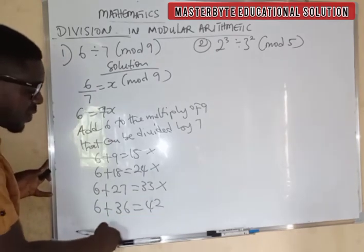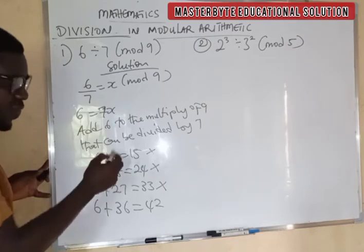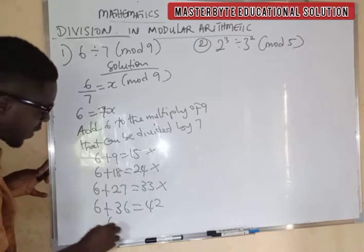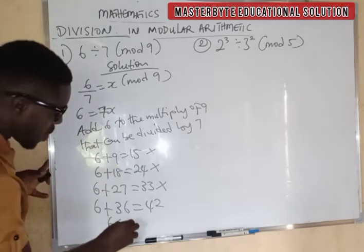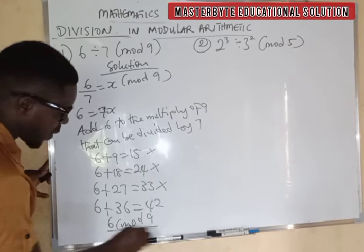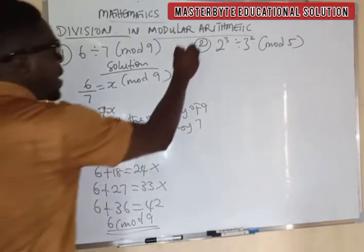7 can divide 42. 7 divided by 42 gives us 6. So our answer is 6, mod 9, as our final answer.